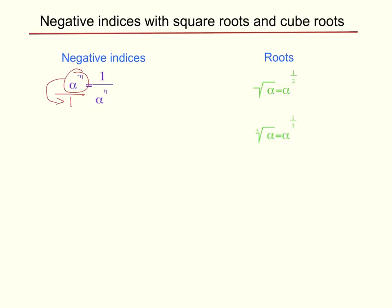This changes the form of the negative n to become a positive n. Therefore we get the answer of 1 over a to the power of positive n. Now the rule for square root is the square root of a equals a to the power of 1 half. The a inside the root has an invisible power of 1 and the root itself has an invisible power of 2.